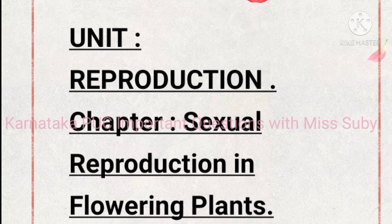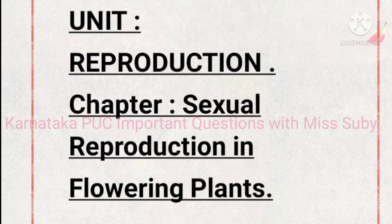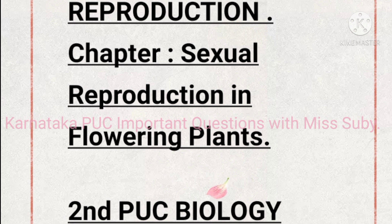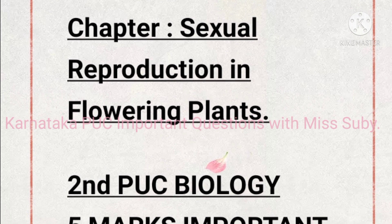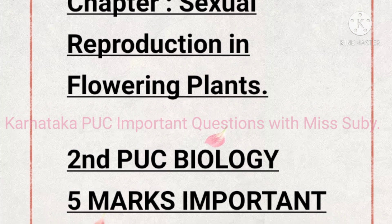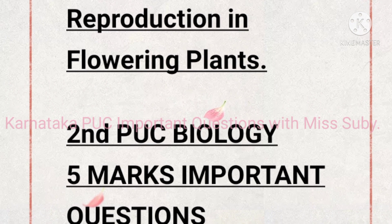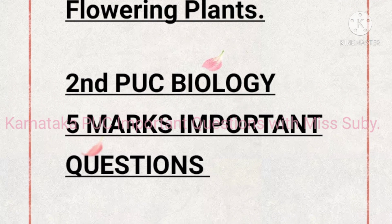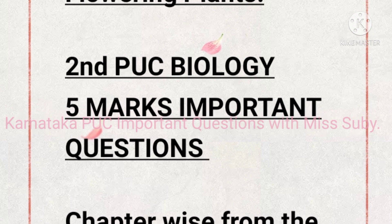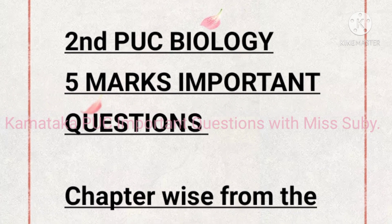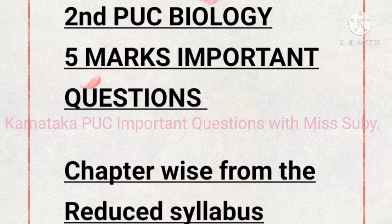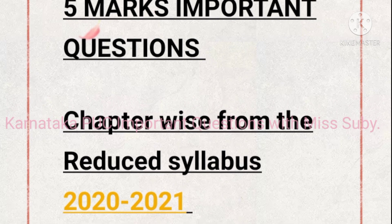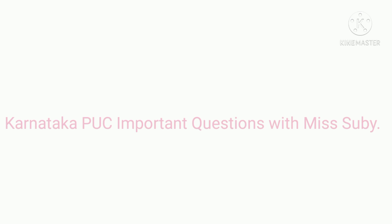Hello friends, in today's video we will see biology 5-mark most important and repeated questions from the chapter 'Sexual Reproduction in Flowering Plants.' These 5-mark important questions are based on the syllabus and previous years' question papers. You have to practice all these questions perfectly to get the maximum marks from this chapter.